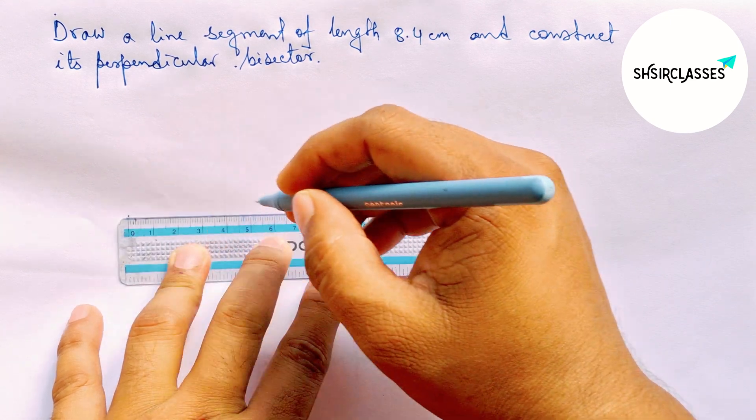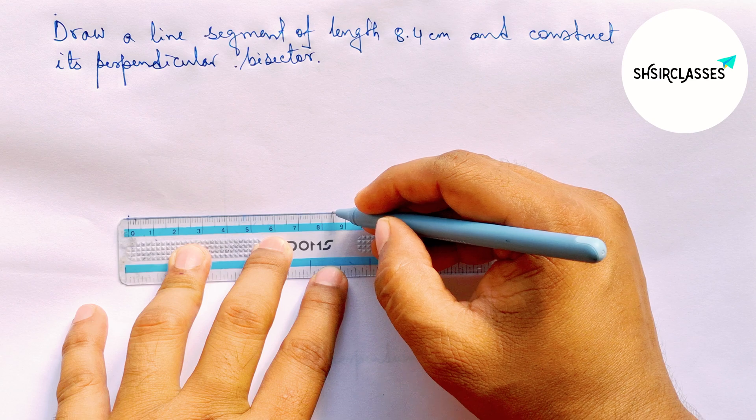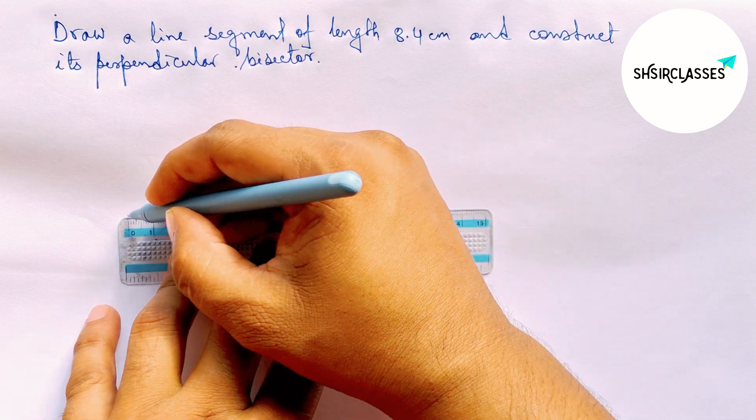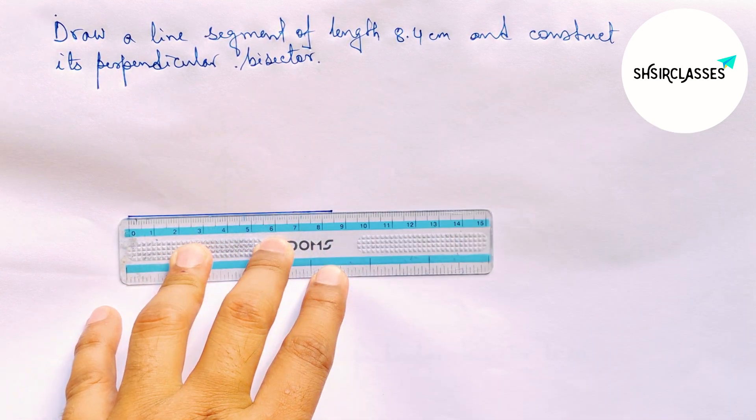Marking here 0, then this is 8, then counting 4. So, this is an 8.4 cm line segment.